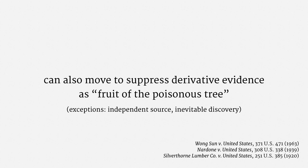Thus far, the exclusionary rule seems quite protective of constitutional rights. But there is an enormous exception — and that's where police officers act in good faith. The idea is that the exclusionary rule should exclusively serve to deter misconduct, and where the police make an understandable mistake, there's no benefit to letting a criminal walk free. The cynical take on the good faith exception is that the current Supreme Court dislikes the exclusionary rule and is whittling it down to the extent possible. In a sense, the good faith exception is like the qualified immunity of the Fourth Amendment's exclusionary rule. The exception has blossomed such that it is swallowing the exclusionary rule.